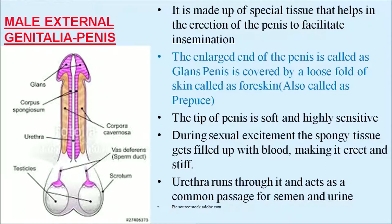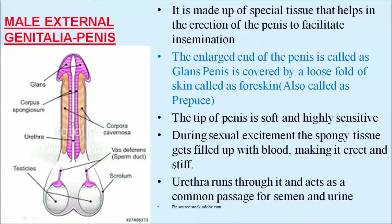The male external genitalia — the penis — is made up of special tissue that helps in erection to facilitate insemination. The large end of the penis is called the glans penis, covered by a loose fold of tissue called the foreskin or prepuce. The tip of the penis is highly sensitive. During sexual excitement, the spongy tissue gets filled with blood, making it erect and stiff. The urethra runs through it and acts as a common passage for semen and urine.